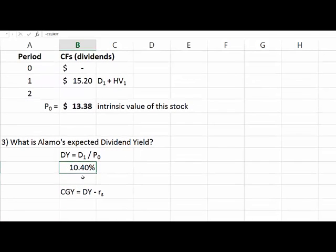We find the dividend yield at 10.4%. What is the capital gains yield? We can find this by subtracting: it's RS minus DY. Just corrected this, I had it the other way.